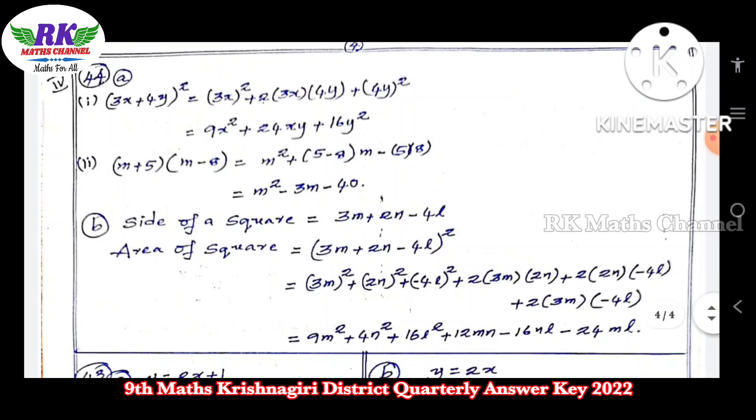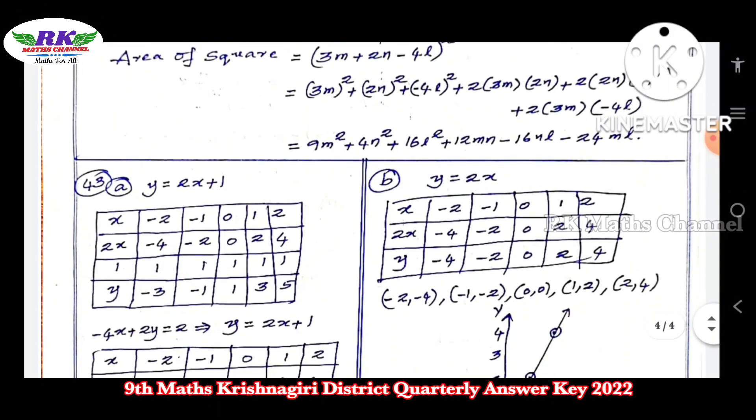Problem 44 deals with formulas - a plus b whole square and x plus a into x plus b formula. There are two problems. If you look at the b option, you can use a square side formula, then you can apply a place, b place, c whole square formula. It is simple. There is no geometry.